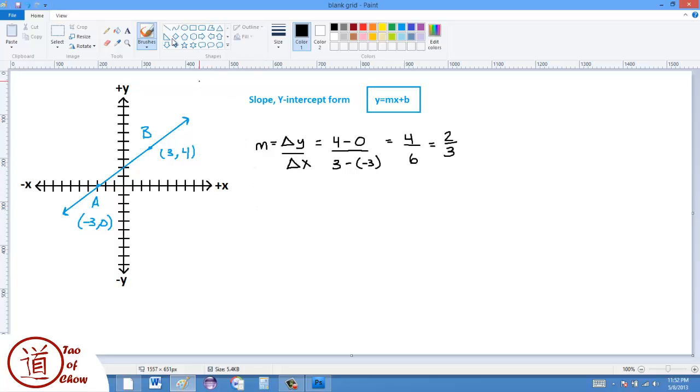Okay, the b value then can be found by looking at a property of the y-intercept. The y-intercept here has the property of having an x value of 0. So this is (0, b). So what we can do is we can set up another slope equation. I can say m is equal to delta y over delta x, so change in y over change in x, and I can use B and the y-intercept.